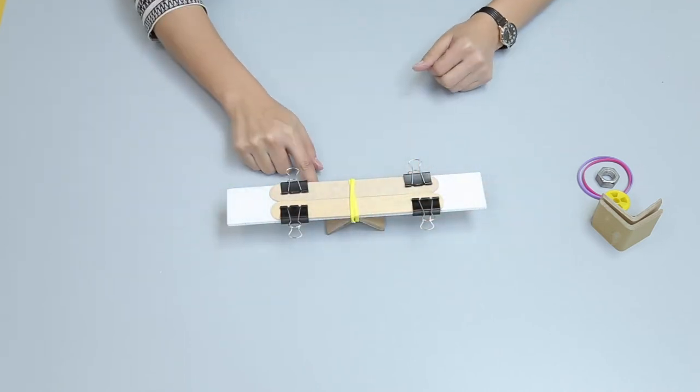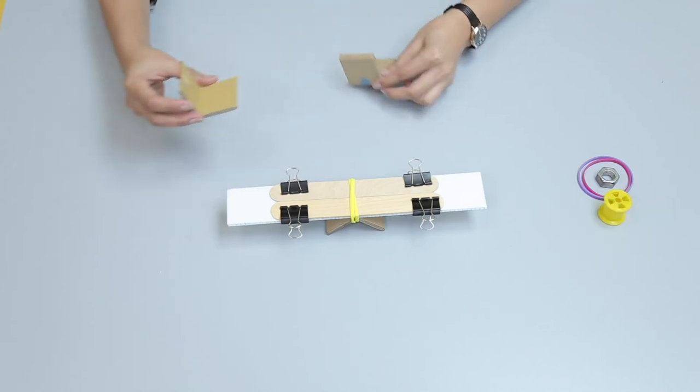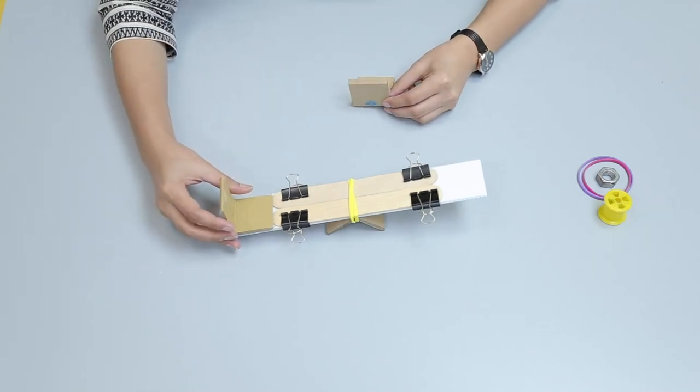Attach two cardboard angles at both ends of the lever with the help of rubber bands.